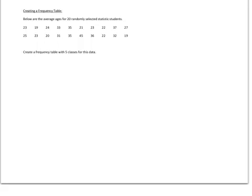Hello. This video is for an elementary statistics student towards the beginning of the course, where you learn how to organize your data into a frequency table. This data represents 20 randomly selected students and the ages of each of these students. Rather than having raw data just listed, especially when we have larger numbers of pieces of data, we like to organize it in a frequency table.